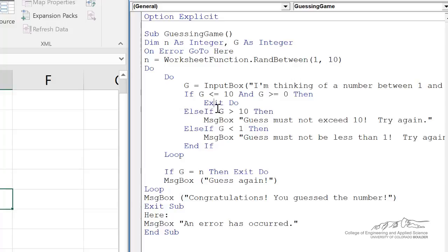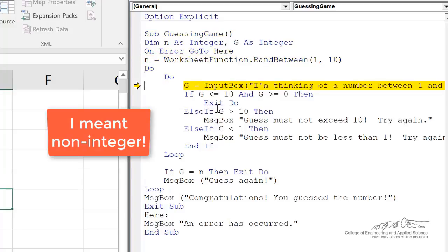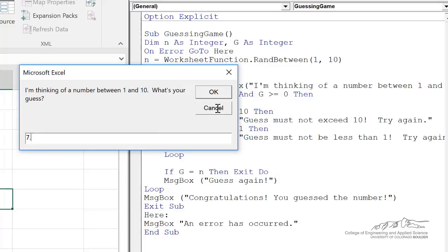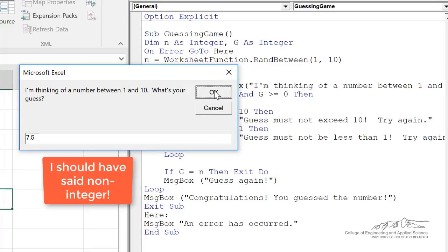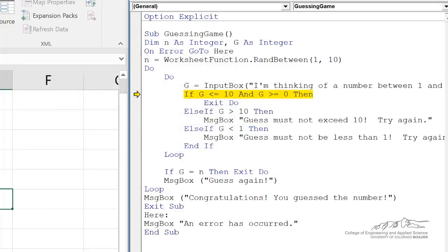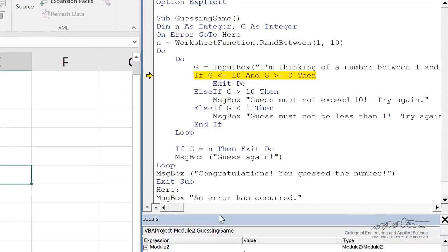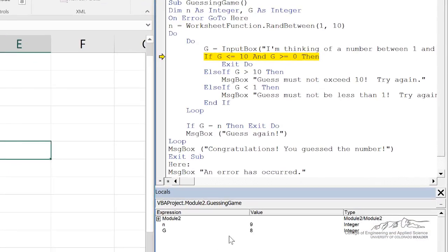The next improvement we're going to make is if they enter an integer. So here, you notice that if I put in an integer like 7.5, that if I open up the locals window down here, it actually converts that, it rounds it to an integer. So it rounded 7.5 up to an 8.